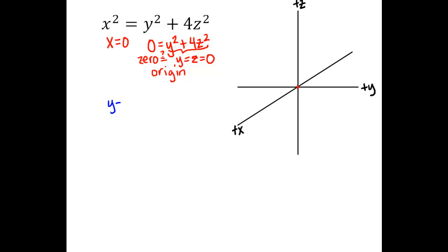Let's do y = 0 next. When I plug in y = 0, I get x² = 4z². This looks a little bit like the equation of a hyperbola — if both variables were on the same side, they'd have opposite signs on their coefficients, which is typical for a hyperbola. But again, the constant term is 0, so it's a degenerate hyperbola. We have to think about whether there are any values that make this true, and both sides are always 0 or positive.